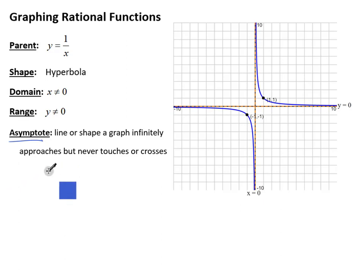What is an asymptote? It's a line or shape that a graph infinitely approaches — it gets closer and closer and closer — but it never actually touches or crosses. So it's like a forbidden value. We can get really, really close, but we can't actually touch it or leap over to the other side.